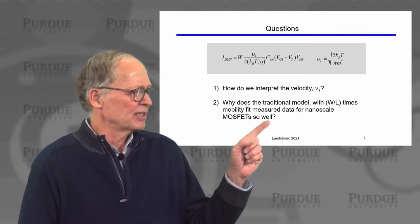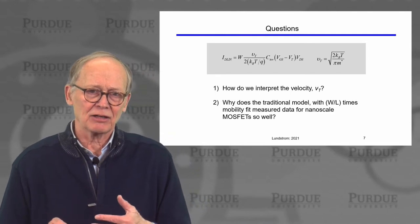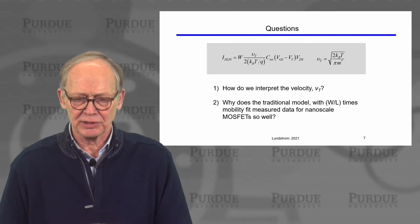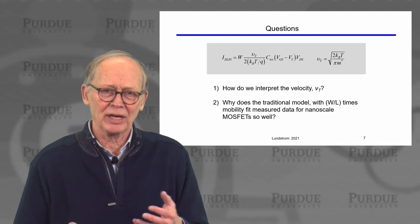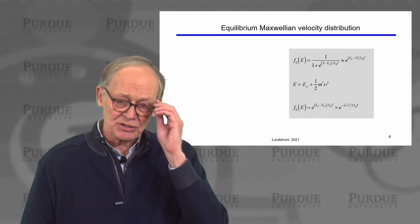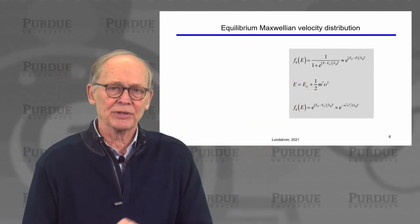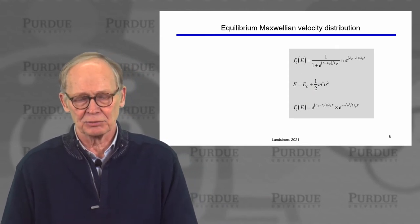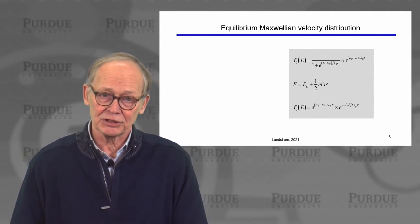The other question is: our ballistic MOSFET expression looks much different than the traditional expression, but the traditional expression seems to work really well — can we understand why? In thermal equilibrium, for an n-channel MOSFET, the occupation of the states in the conduction band is described by a Fermi function. Under non-degenerate conditions, which we assume to simplify the math, that Fermi function can be simplified to an exponential.